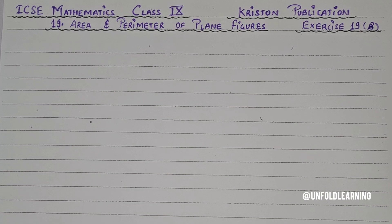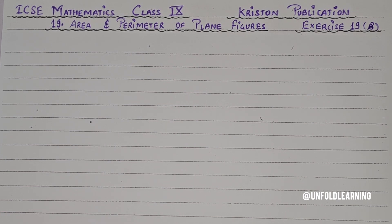Let's start Exercise 19B with the formulas we will use. Today we will cover area and perimeter of quadrilaterals. The name quadrilateral comes from 'quad' meaning four — any plane figure which has four sides is called a quadrilateral.